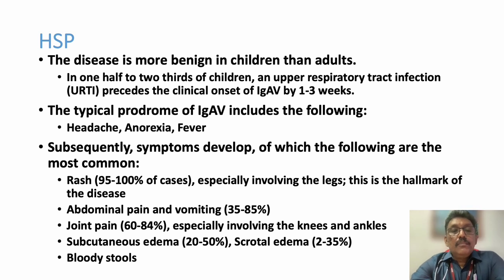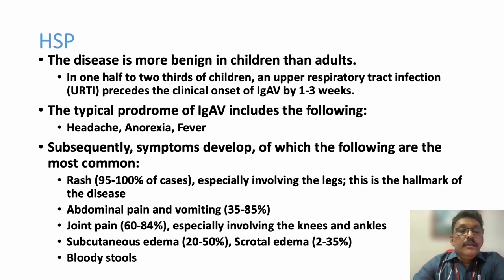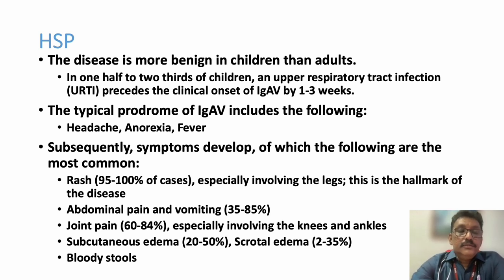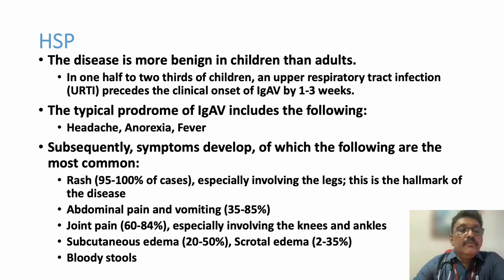Many patients can have prodromal symptoms like headache, anorexia, and feverish feeling. Then the patient develops rashes mainly in the lower limbs - palpable rashes in 90 to 100 percent of cases. Abdominal pain and vomiting can be present in 35 to 85 percent of patients. Joint pains occur in 60 to 84 percent, especially in the knee and ankle joints. Some patients can have subcutaneous edema, scrotal edema, and blood in the stools. These findings - abdominal pain, joint pains, generalized edema, blood in stools - indicate internal organ complications requiring careful management.